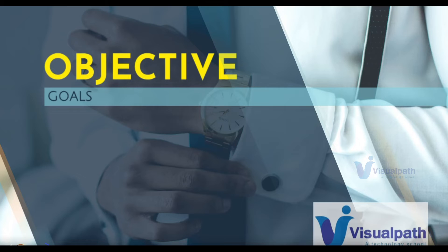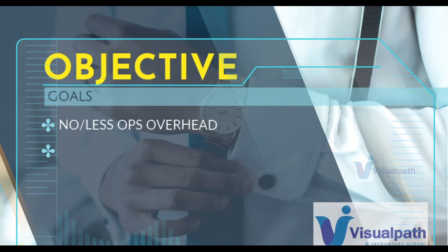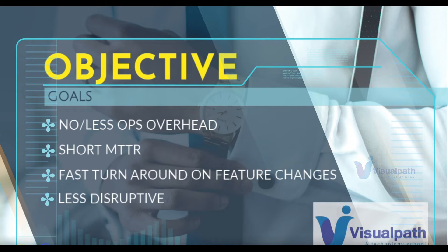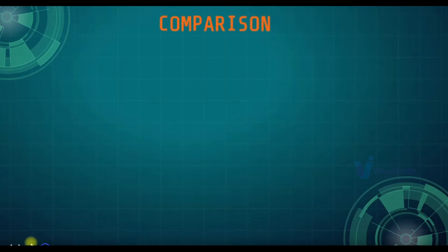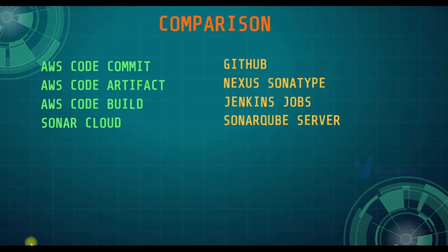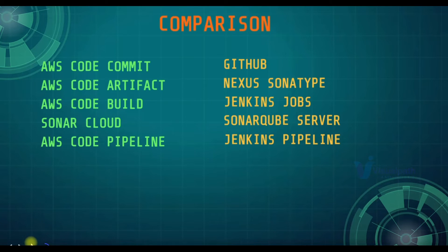Whatever we do, we have to keep our goals in mind: no or very low operations overhead, short MTTR, and fast turnaround time. All the automation we are doing is for that — so we can quickly make changes whenever there is a requirement, and if there is any issue or bug, we can resolve it very quickly. If you've done the previous CI/CD project on Jenkins and SonarQube, I'd like to make a quick comparison: CodeCommit instead of GitHub, CodeArtifact instead of Nexus Sonatype, CodeBuild instead of Jenkins jobs, SonarCloud instead of SonarQube server, and AWS CodePipeline instead of creating a Jenkins pipeline. These left-hand side cloud services are what we're going to use in order to have no ops or less operation overhead.